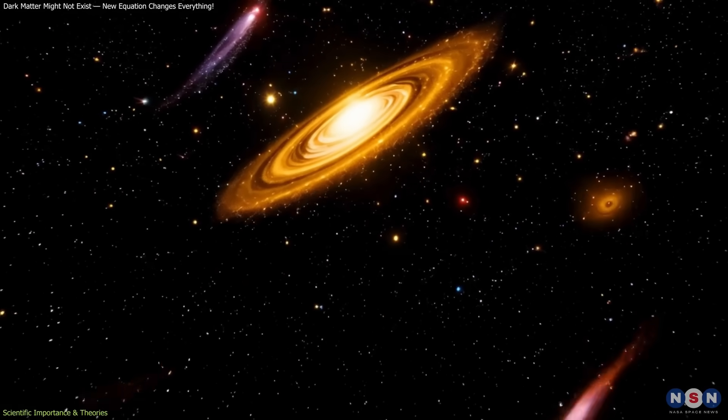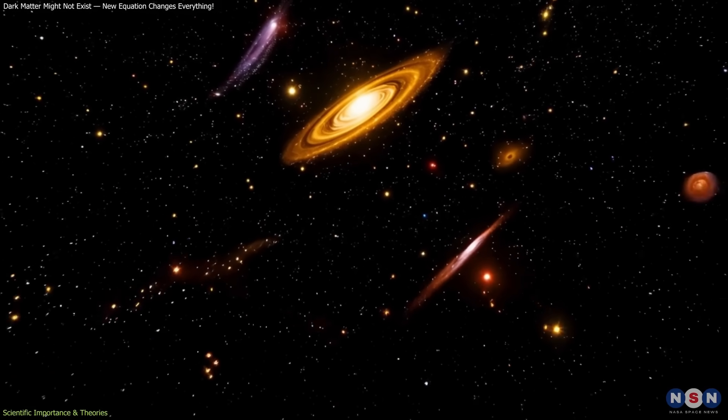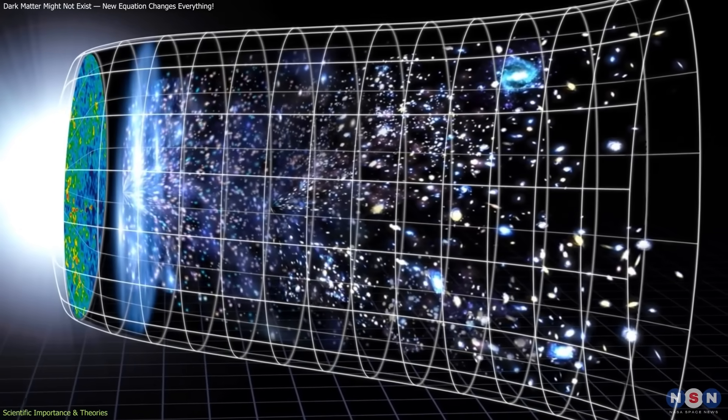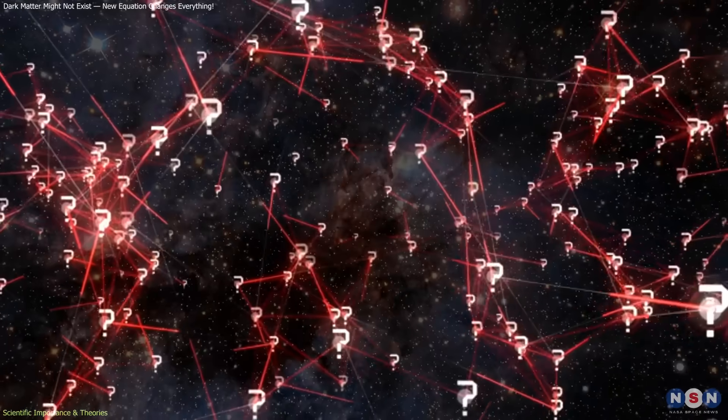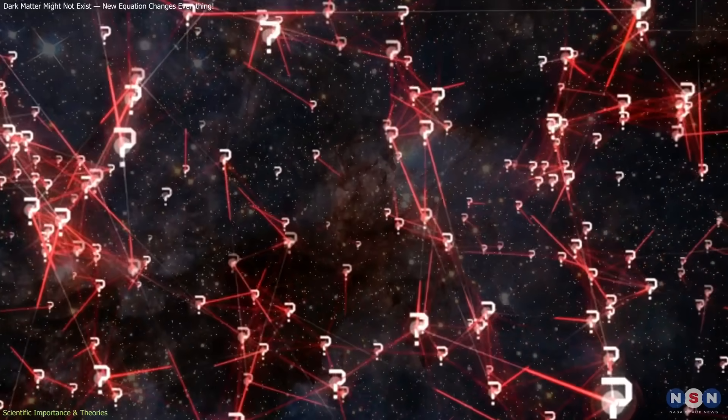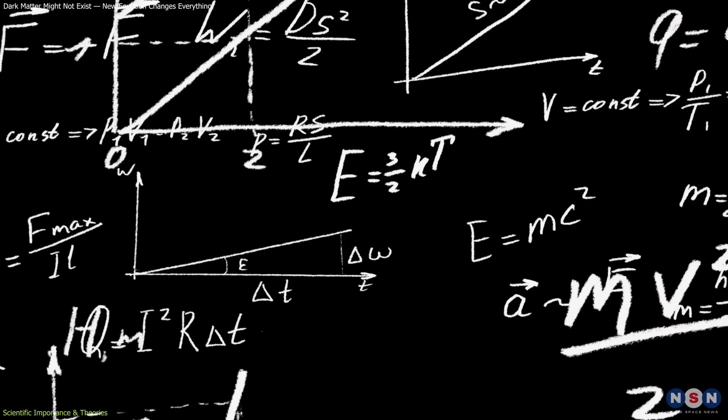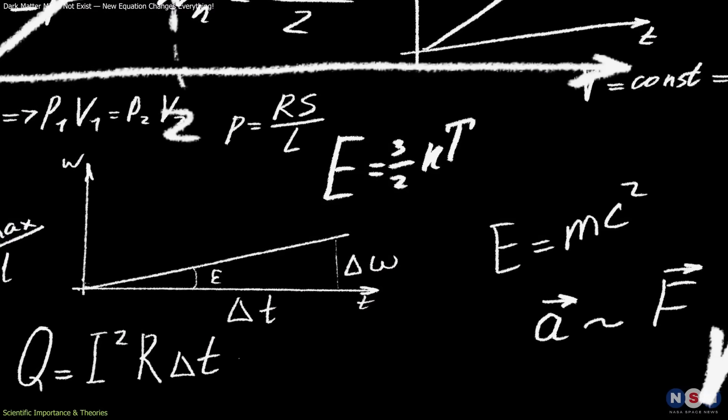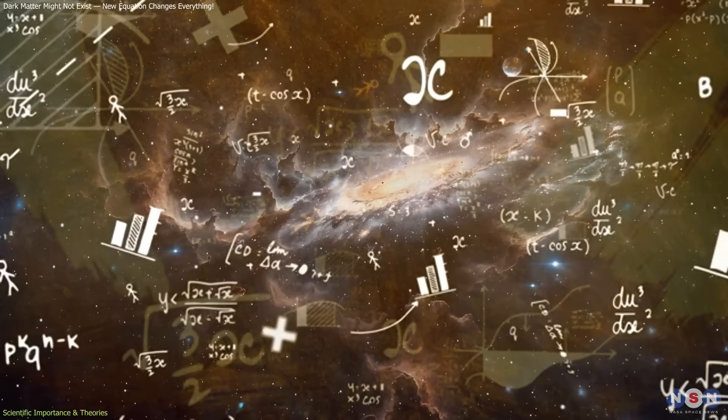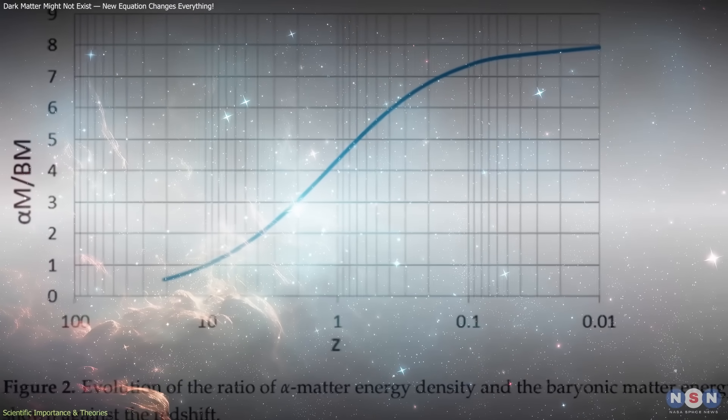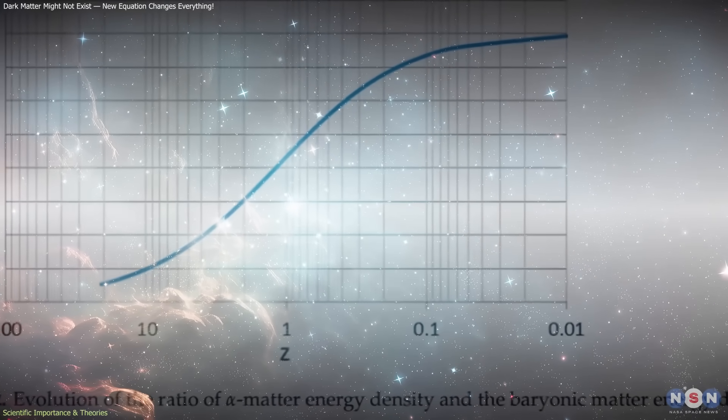Still, scientific progress often comes from exploring ideas that appear radical. Even if this new framework doesn't replace the Standard Model, it pushes physicists to question fundamental assumptions, particularly whether physical laws are eternal or adaptive. If constants evolve, then the universe isn't governed by fixed rules, but by slowly changing relationships between its forces. That concept, while speculative, could revolutionize how we think about physics itself.